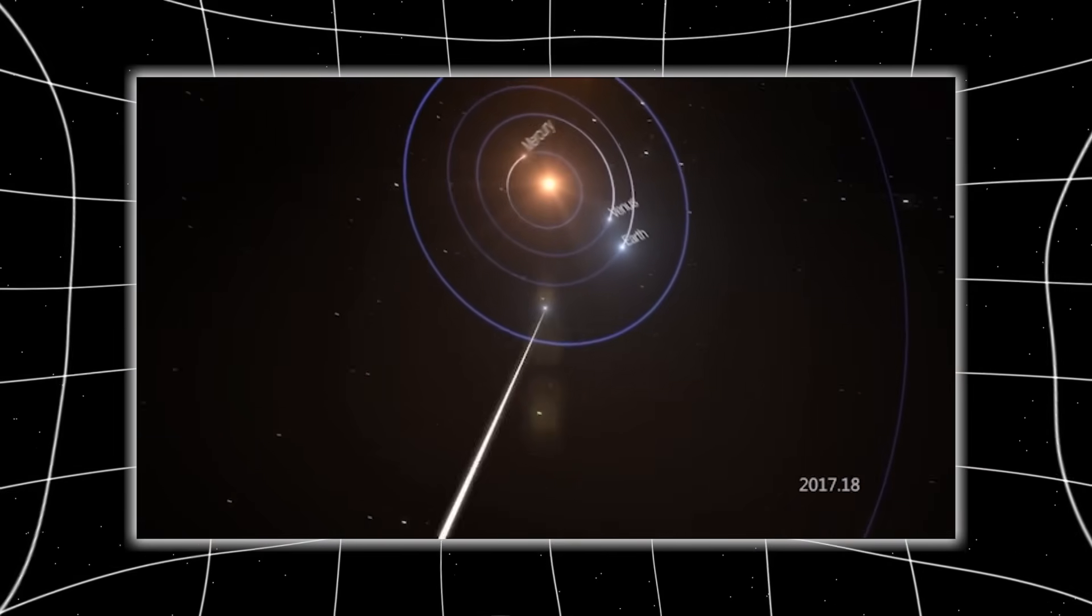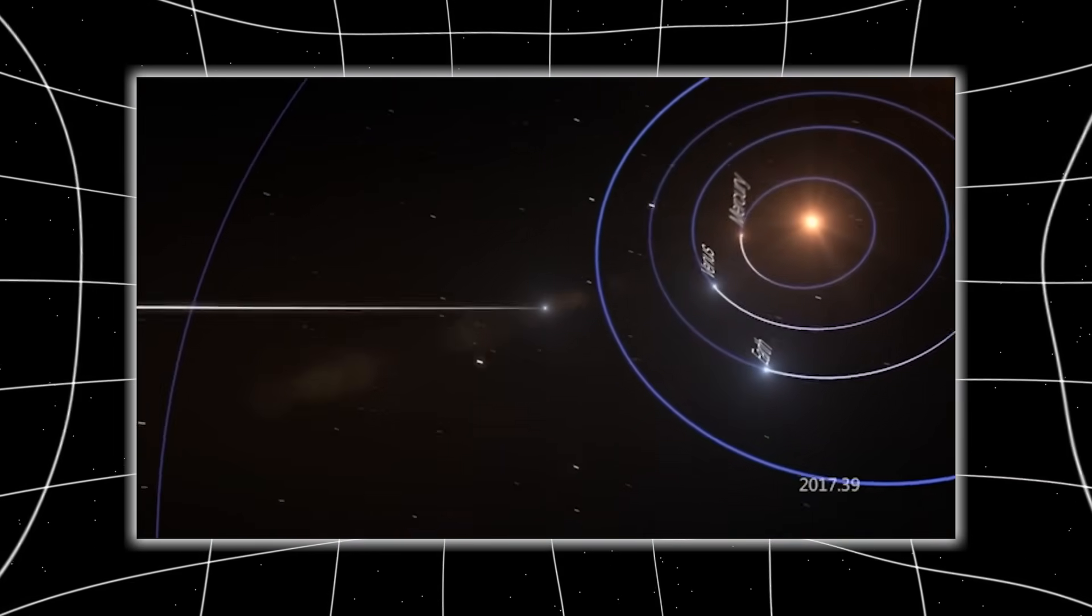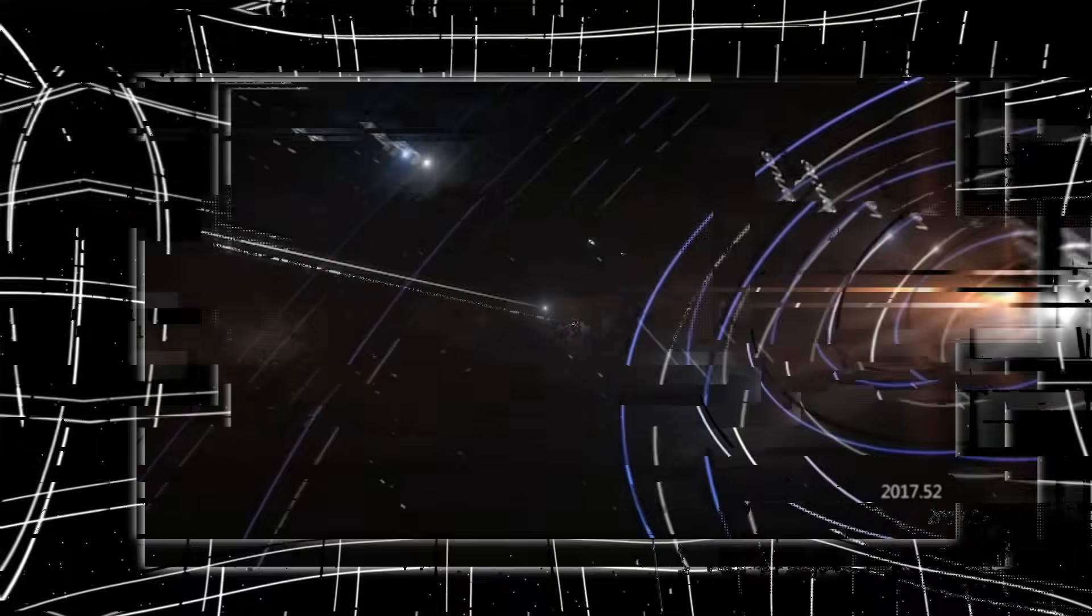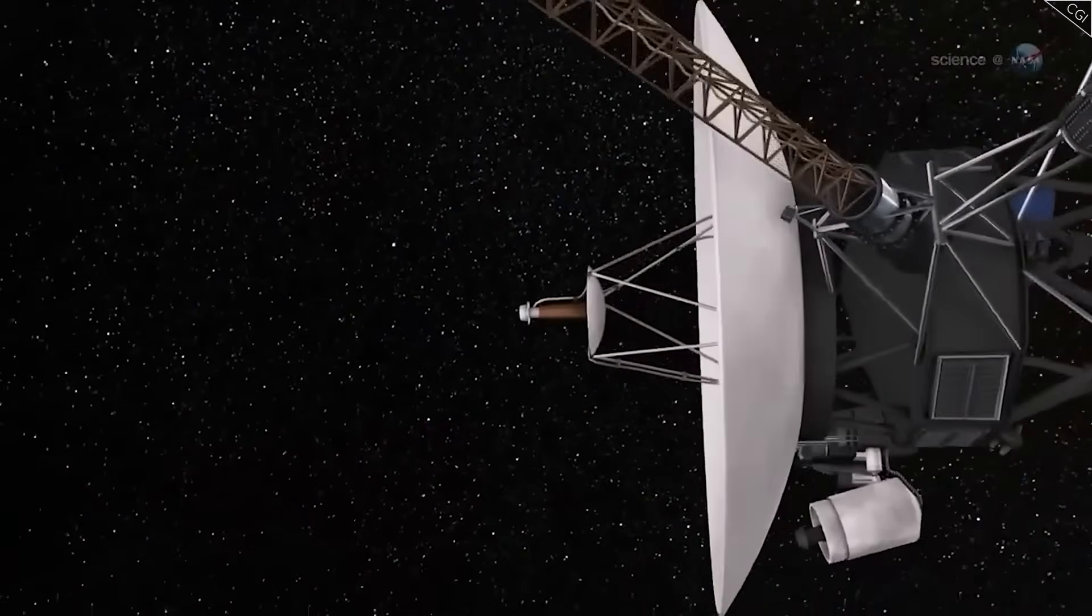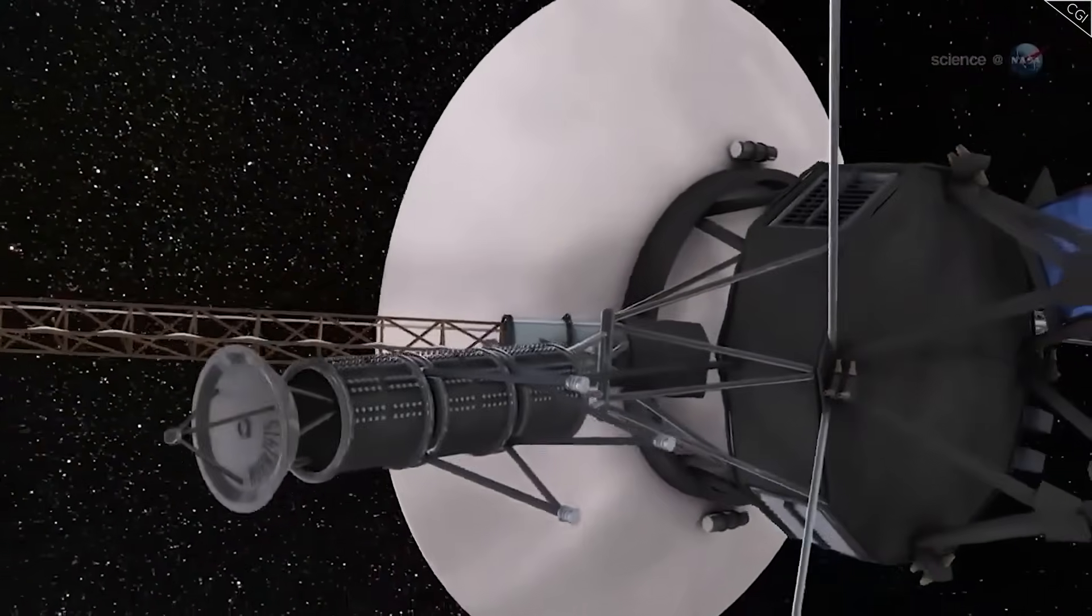Something changed when these two trajectories nearly touched. And now, the world is left wondering. Did Voyager 1 really make contact with something not from our world? Or did something else, something no one expected, respond first?